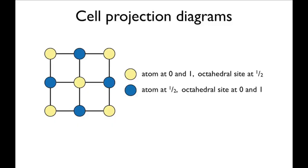The octahedral sites lie above and below the atoms. When the atoms are at positions zero and one, the octahedral sites are at a half. When the atoms are at a half, the octahedral sites are at zero and one.